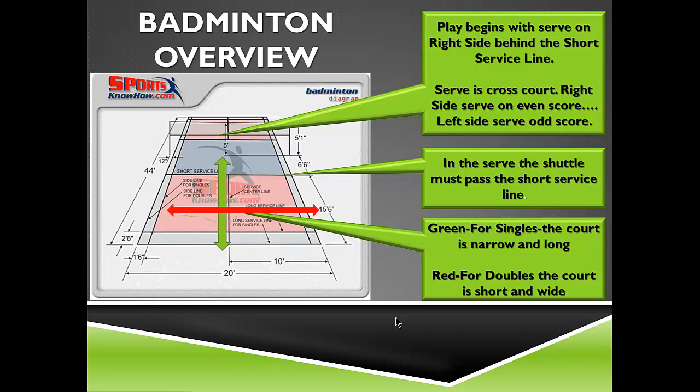Starting with an overview of the sport and general rules, play begins with the serve on the right side of the court, and both feet must be behind the short service line as shown on the court diagram. Service is always cross-court, beginning on the right side with an even score and the left side with an odd score. The serving player's score determines whether they serve on the right or left side.